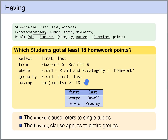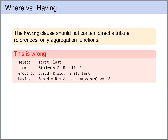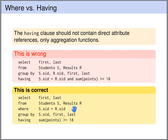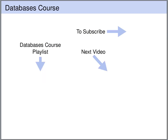In the HAVING clause we specify a condition that all groups must fulfill; groups that do not meet this condition are dropped. We are only allowed to use aggregation functions and not allowed to directly refer to attribute values. A query is wrong if it references simple attribute values in the HAVING clause — such conditions that compare individual row attributes, like requiring that the SID of a student matches the SID of a result, should be placed in the WHERE clause. The correct query includes such conditions in the WHERE clause, and the HAVING clause only contains aggregation functions.